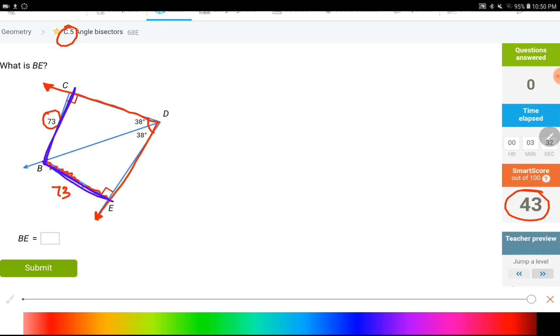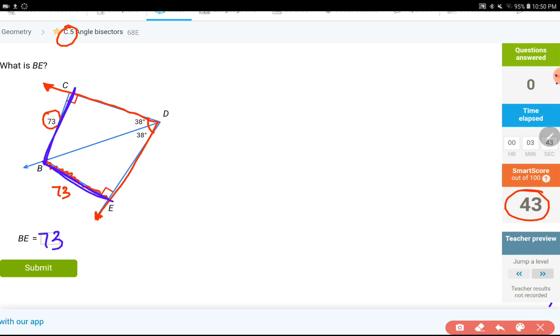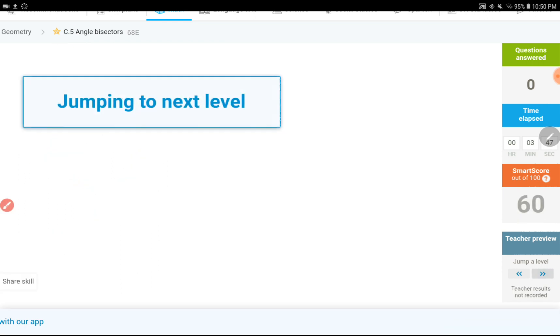When you have angle bisectors, the length of these two perpendicular sides are going to be the same. That's why BE is going to be 73. Let's pause the video and see the next question, next level.